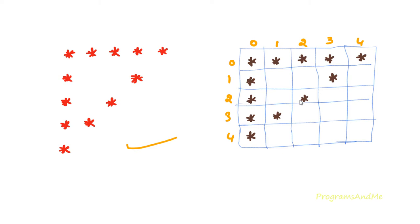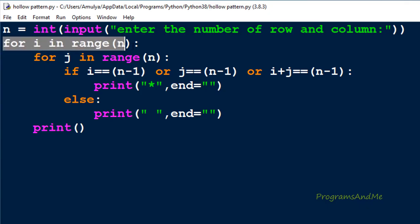The first for loop is for the row; inside that we take the for loop for the column. In row 0 we print all the stars across the columns, then we go to row 1 and print stars and spaces in the required columns, and so on. That's why we first take the for loop for row and inside that the for loop for column.